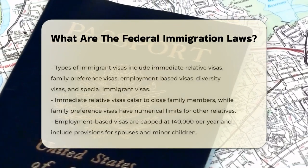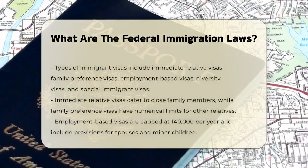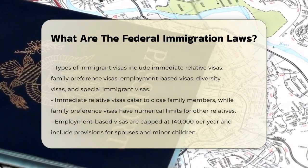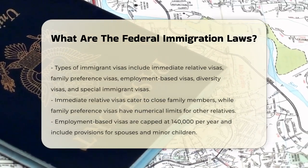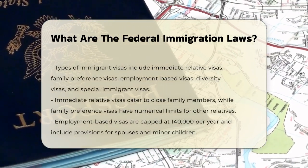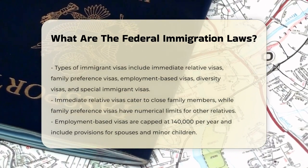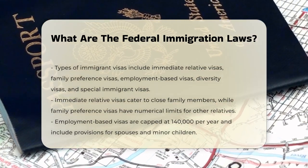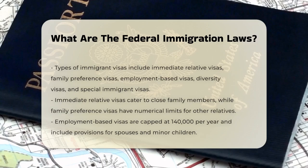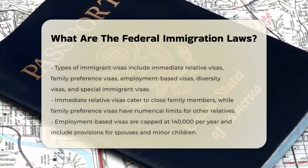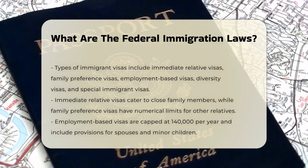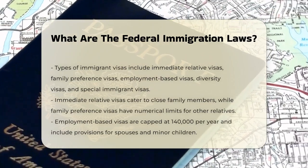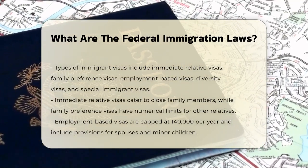Family preference visas are for other relatives, but these have numerical limits. Employment-based visas are for workers, with a cap of 140,000 per year, including their spouses and minor children. Diversity visas are for people from countries with low rates of immigration to the U.S. And special immigrant visas are for non-citizens who have worked for the U.S. government or military.